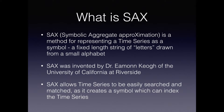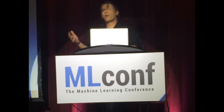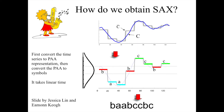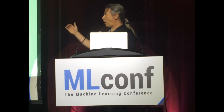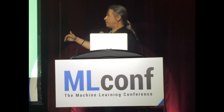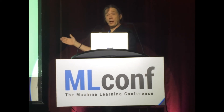SAX allows time series to be searched and matched because it uses a symbol, and you can use standard programmatic techniques to manipulate time series. To obtain a SAX word, the first thing you do is reduce the time series to a piecewise aggregate approximation, which averages the components of the time series into a fixed number of data boxes corresponding to the SAX letters. We then z-normalize it and divide the normal distribution into equal area sections, using the quantile to divide the distribution into the various letters.